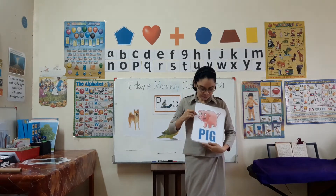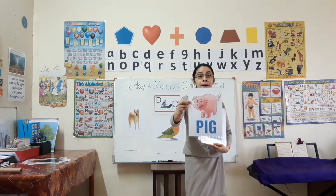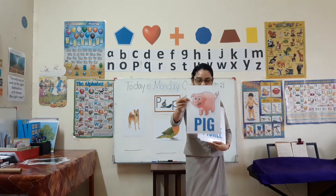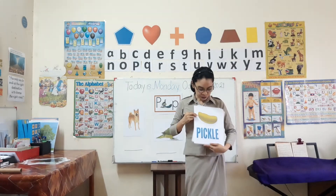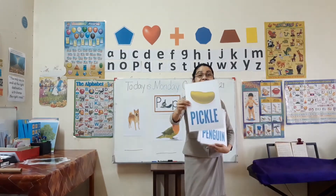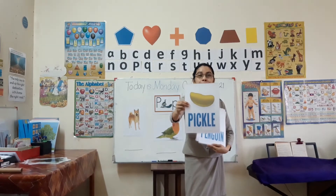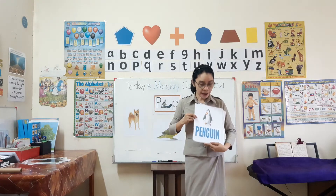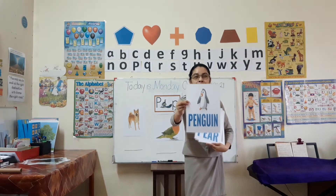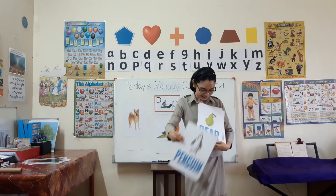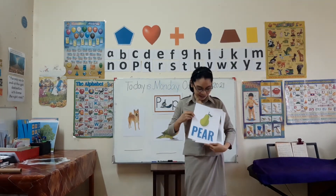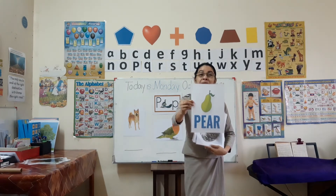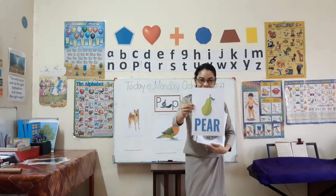What about this one? Panda — a cute panda. Do you hear this sound? Panda. And this one is a pig. And this one is called pickle. And this one is penguin. And the last one is pear.